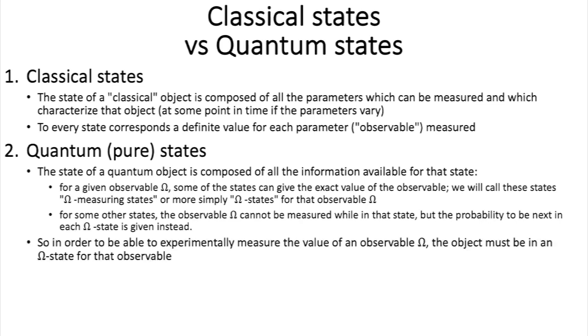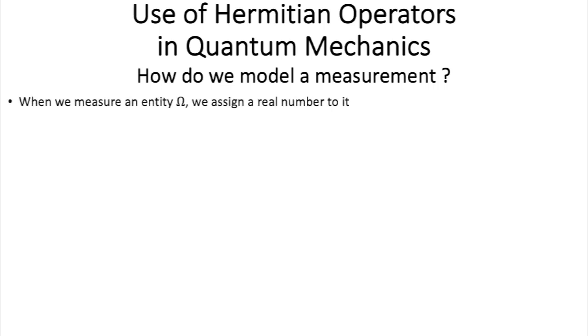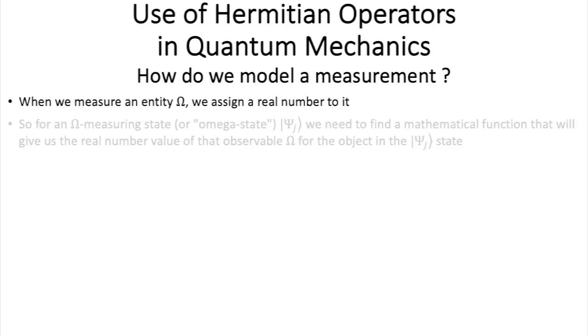So, to summarize, in order to be able to experimentally measure an observable omega, the object must be in an omega state for that observable. And for a given omega, there are n omega states, which correspond to the n possible values that can be measured for that observable. And we will note them like this. So, how do we model a measurement? In other words, how do we find in the math world the isomorphic counterpart of a measurement in the physical world? Well, when we measure an omega, we assign a real number to it, that's how we say we measure omega.